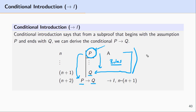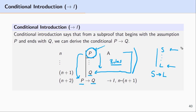Another way of thinking about conditional introduction is that you make an assumption. Let's say you assume S and then you reason to L. You say under this assumption, if S is the case then L is the case. Conditional introduction simply summarizes the reasoning that went on in this sub proof — that is, under this assumption S you derived L, and so you can summarize this entire sub proof with the single formula: if S then L.